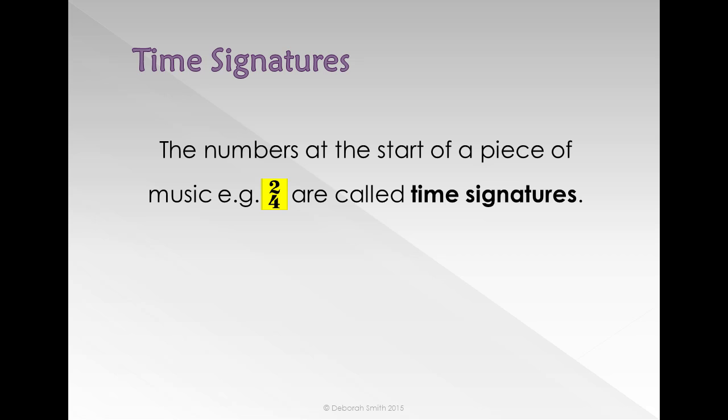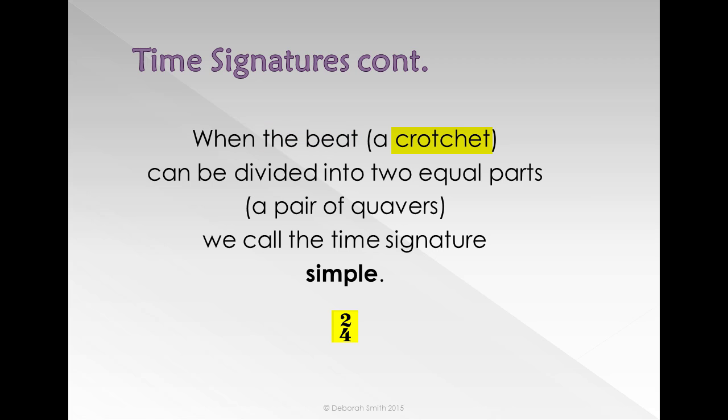The numbers at the start of a piece of music are called time signatures. When the beat, in this case a crotchet, can be divided into two equal parts, we call the time signature simple.